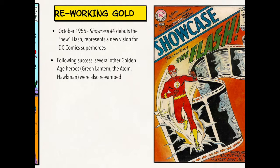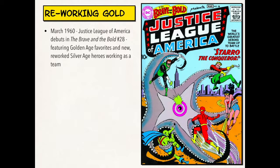These popular heroes were brought together in March of 1960. In the golden age, there had been superhero groups, particularly the Justice Society of America. But the Justice League of America debuted in Brave and Bold No. 28 and featured all of those golden age favorites and some of the new reworked Silver Age heroes working together as a team. This team book created a sense of continuity between the golden age characters like Wonder Woman, Aquaman, and Martian Manhunter, and the new, exciting characters that had been updated for the modern era like Flash and Green Lantern.